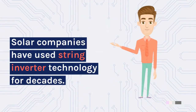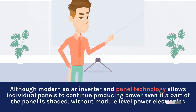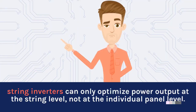Solar companies have used string inverter technology for decades. It's a super reliable, tried and true technology, but as with other inverter technology options, may not be suitable for certain types of installations. Although modern solar inverter and panel technology allows individual panels to continue producing power even if part of the panel is shaded, without module-level power electronics, string inverters can only optimize power output at the string level, not at the individual panel level.